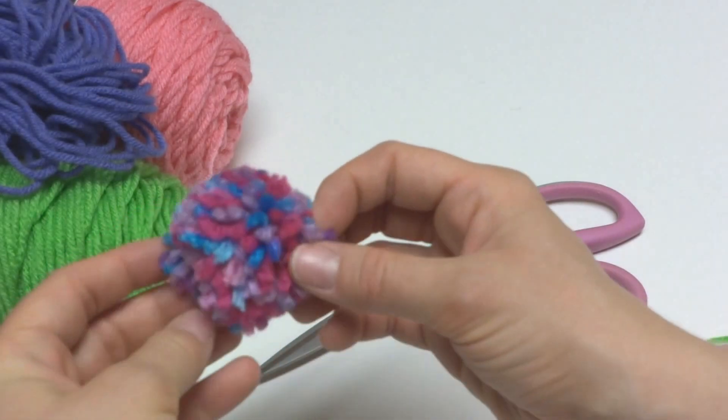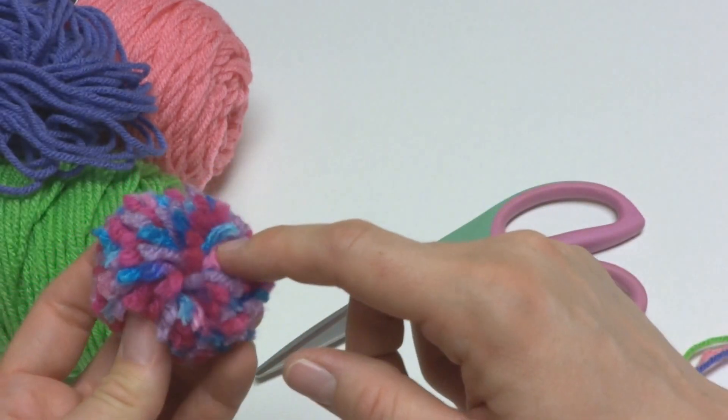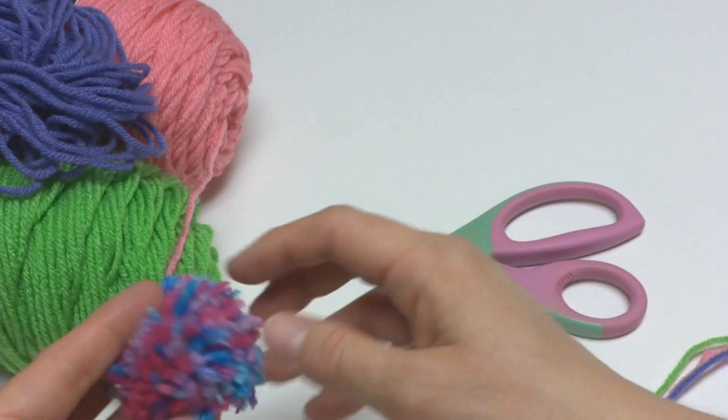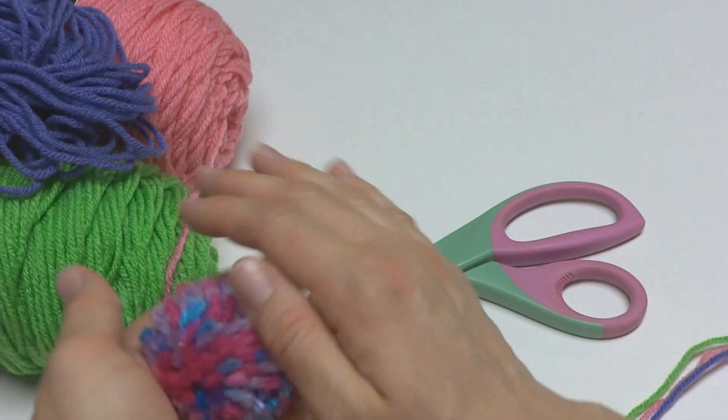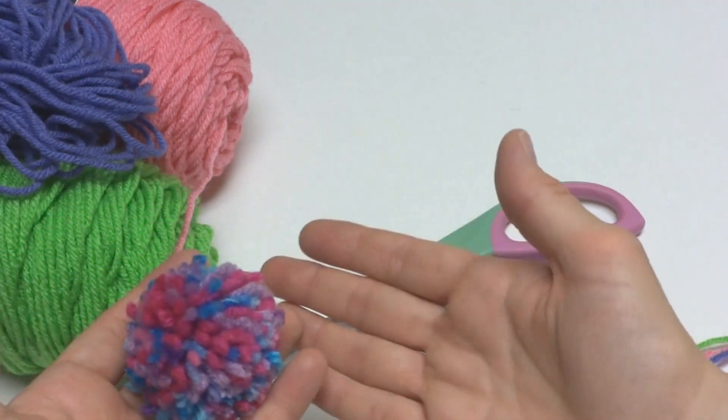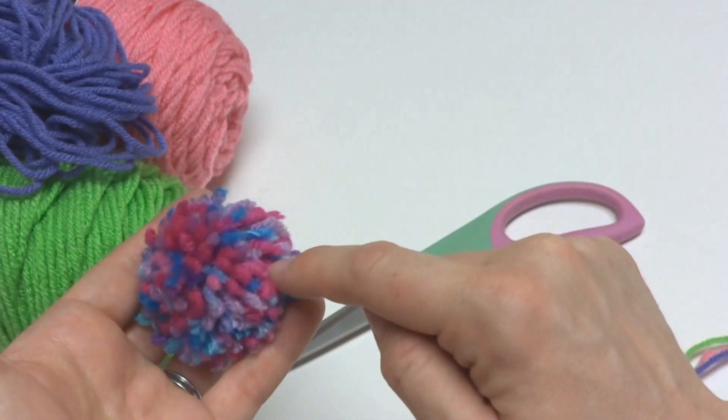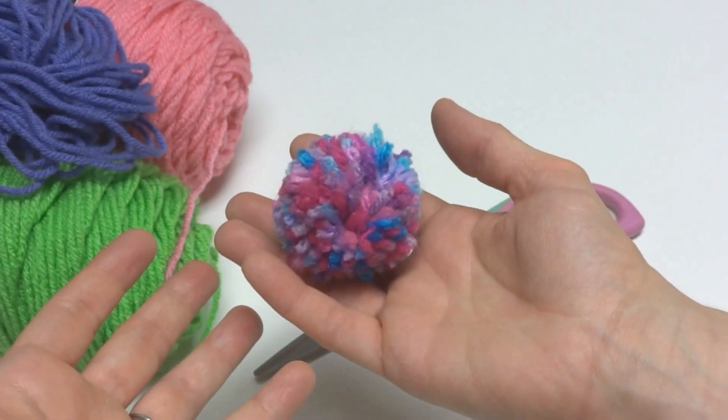And this pom-pom here was made using a light purple, a blue, a pink, and a light pink. It's good to know if you're making, for example, a striped hat and you want to incorporate all the colors from the stripes into your pom-pom or similar project.